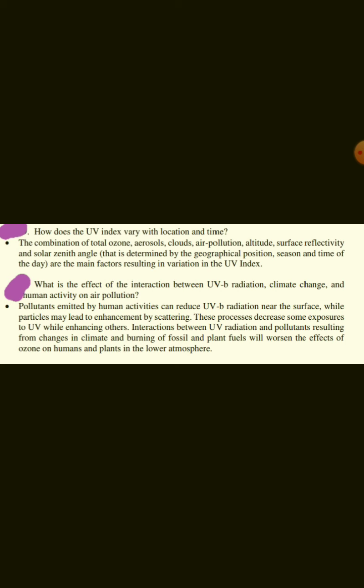What is the effect of the interaction between UV-B radiation, climate change, and human activity on air pollution? Pollutants emitted by human activities can reduce UV-B radiation near the surface, while particles may lead to enhancement by scattering. These processes decrease some exposures to UV while enhancing others. Interactions between UV radiation and pollutants resulting from changes in the climate and burning of fossil and plant fuels will worsen the effects of ozone on humans and plants in the lower atmosphere.